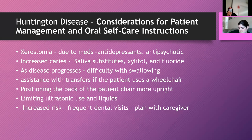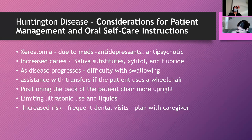Oral manifestations of Huntington's include xerostomia, increased caries, and as the disease progresses, difficulty swallowing. Patients may be in wheelchairs, requiring semi-supine or upright positioning and limiting ultrasonic use due to fluid management. Increased risk of dental caries and periodontal disease necessitates frequent dental visits. All information should be discussed with the caregiver, similar to other neurodegenerative conditions. These diseases share many of the same clinical conclusions and patient management approaches.